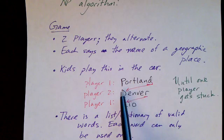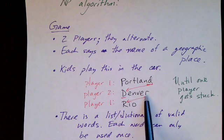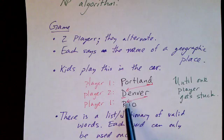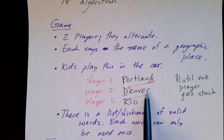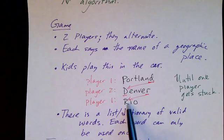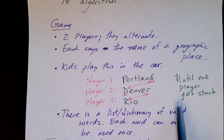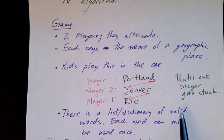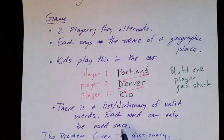So for example, player one may start the game by saying Portland. That ends with a D, and the next player tries to think of a city, and they may think of the city Denver, which begins with a D. Now Denver ends with an R, so it's player one's turn again. Player one has to think of something that begins with the last letter of Denver, which is R, and maybe they say Rio. And this goes along until one player gets stuck.